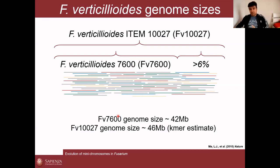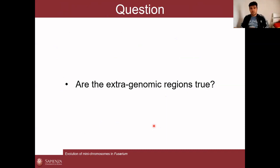In an independent approach, we knew the reference strain genome size was 42 MB. Using a k-mer estimate, we found that the Italian strain has a larger genome of 46 MB — again, something extra. The first question was: are these extra genomic regions real? We could have contamination during Illumina sequencing, a bacterial infection, or simply an error. So we isolated the strain again and went through nanopore sequencing.